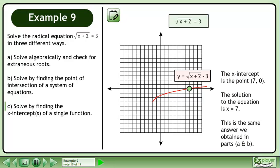The x-intercept is the point. The solution to the equation is x equals 7. This is the same answer we obtained in Parts A and B.